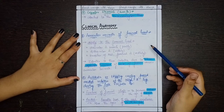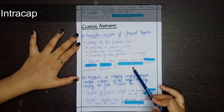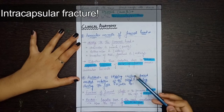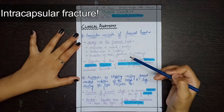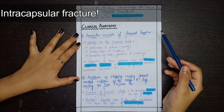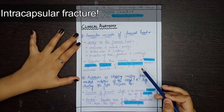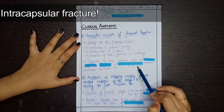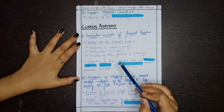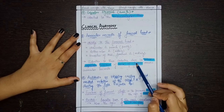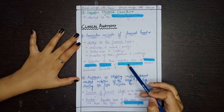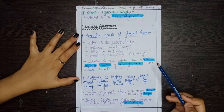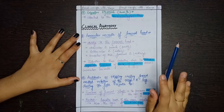Due to an intracapsular fracture of the neck of the femur — meaning a fracture within the capsule of the hip joint, formed by the femoral head and the hip bone — there is damage to these arteries. Since these arteries supply the region near the neck and head of the femur, a fracture there causes injury or lesion to them, resulting in reduced blood supply and avascular necrosis of the femoral head.